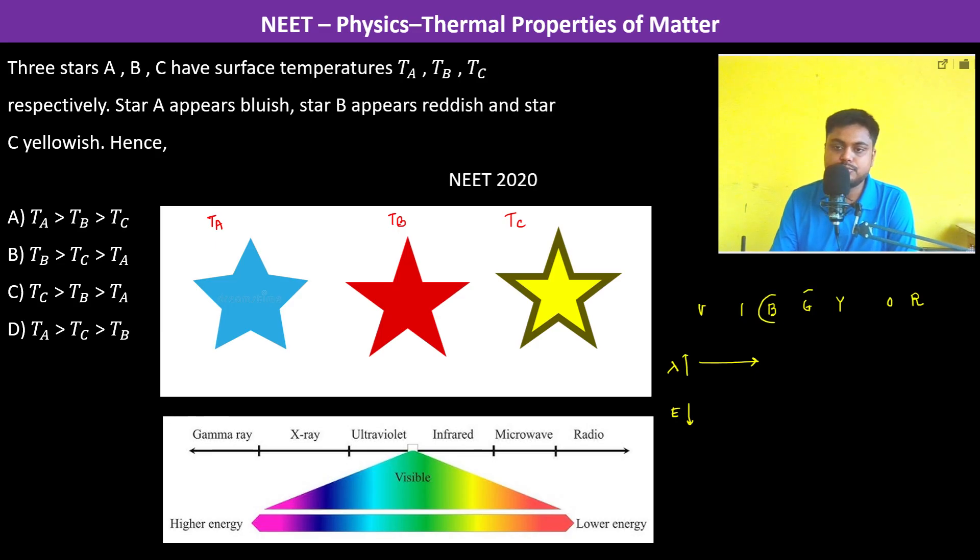Let us encircle blue, yellow, and red. The energy of blue is going to be greater than the energy of yellow, which is greater than the energy of red. Therefore, the temperature of blue is greater than the temperature of yellow, greater than the temperature of red.